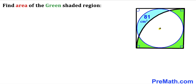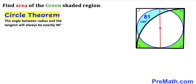Let's draw the diameter of the whole circle passing through its center. Now let's recall the circle theorem: the angle between the radius and the tangent will always be 90 degrees. We know this line is a tangent line and this is our radius, so this angle is 90 degrees.